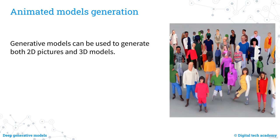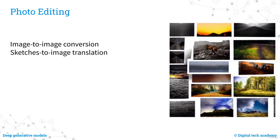AI can be utilised to create 2D images and 3D models for use in computer games and animated videos. These models are trained on large sets of pictures or 3D models and can subsequently generate new, lifelike images or models that resemble those in the training data. For photo editing, generative AI can enhance the resolution of poor quality pictures, colour black-and-white images, turn a day photo into a night one, convert images into artistic paintings, or remove the background and unwanted objects.